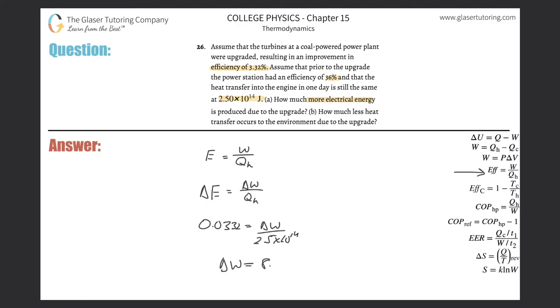And we get 8.3 times 10 to the 12th. And that's in joules. So that's basically the additional amount of work that the engine is able to do due to this small little improvement. So we get about 8.3 trillion joules. And that's quite a number. Small improvement, quite a number. All right, letter B.